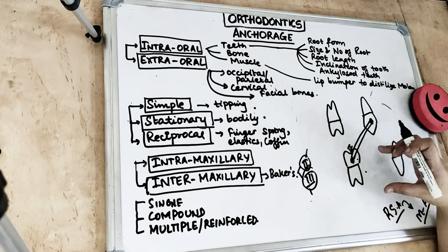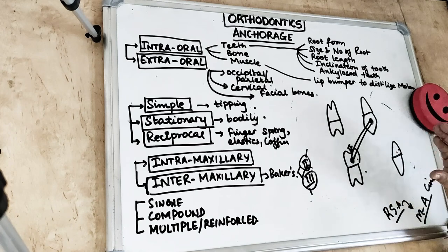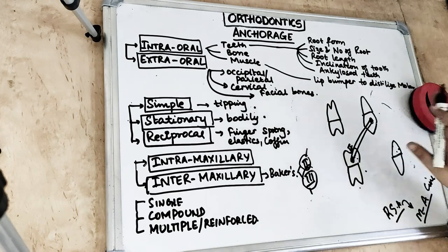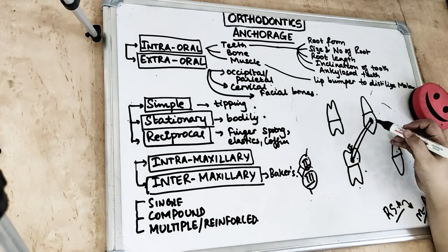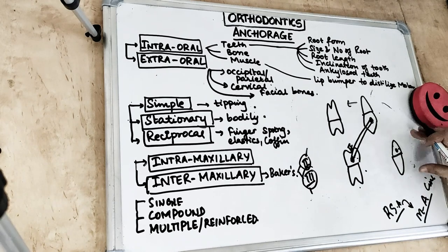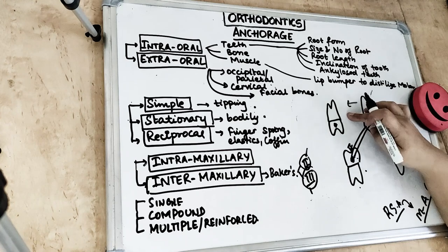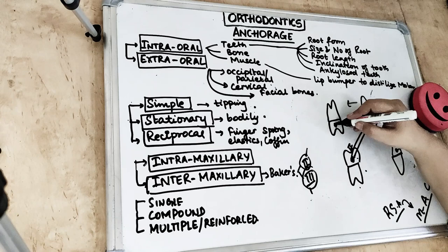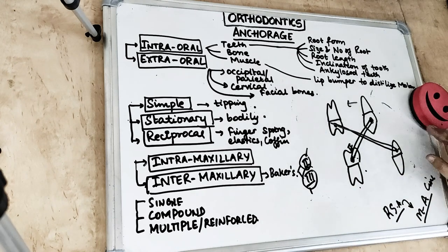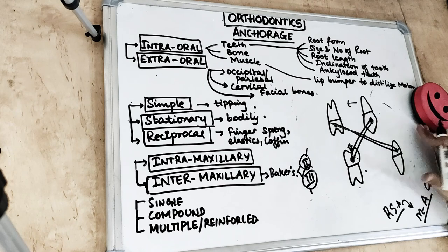The anchor tooth is the one with the higher root surface area, and the tooth to be moved always has the lower root surface area. For Class 2, the canine moves distally. For Class 3, where the mandible is proclined, we want to distalize the mandible - so the mandibular canine is the tooth to be moved and the maxillary molar is the anchor tooth. The force pulls the canine backward, decreasing the Class 3 relationship, used with elastics for treating Class 3 malocclusion.